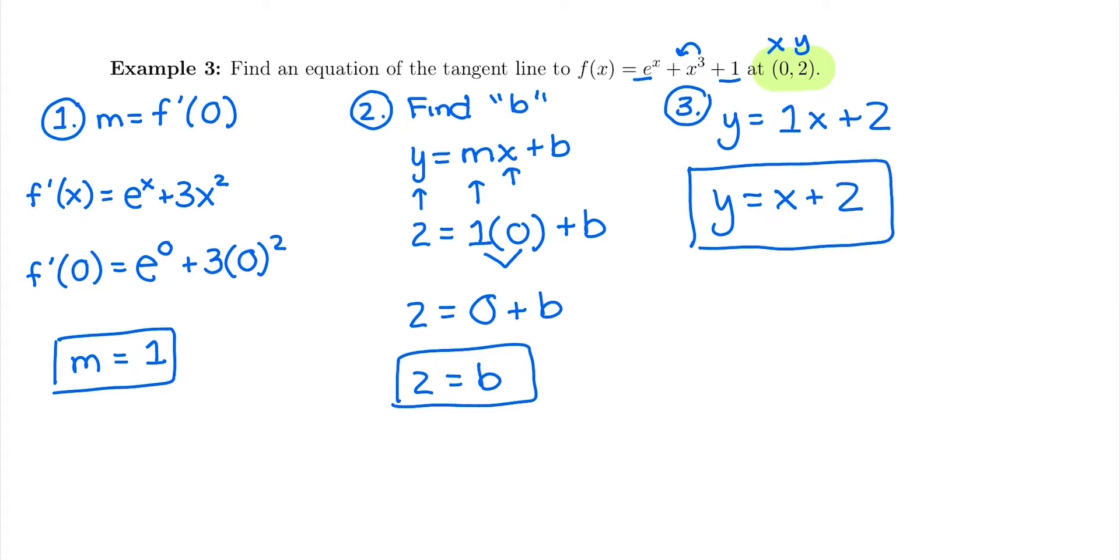There's our three steps. Take the derivative, plug in the x value. That gives you your slope. Write out y equals mx plus b. Replace everything but b to solve for it. And then last step, write the full equation y equals mx plus b using the m and b that you found in the first two steps.